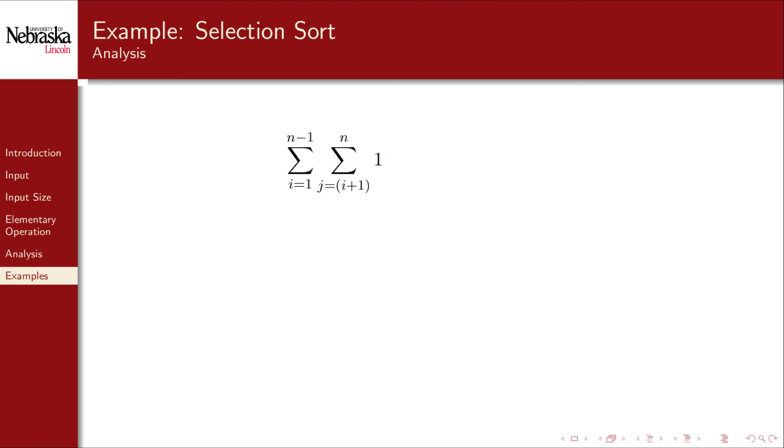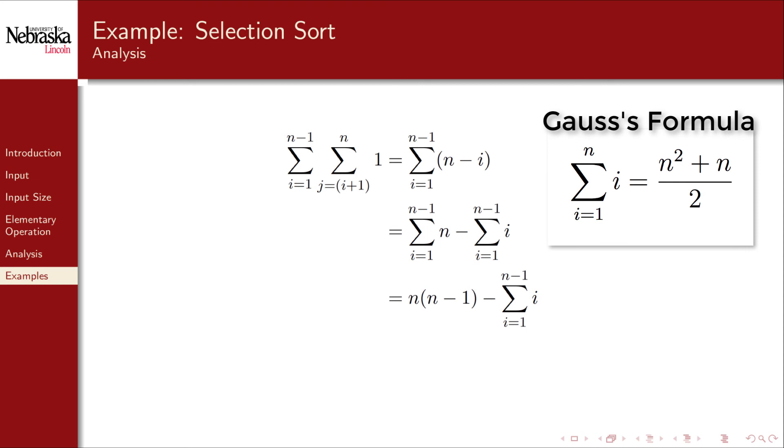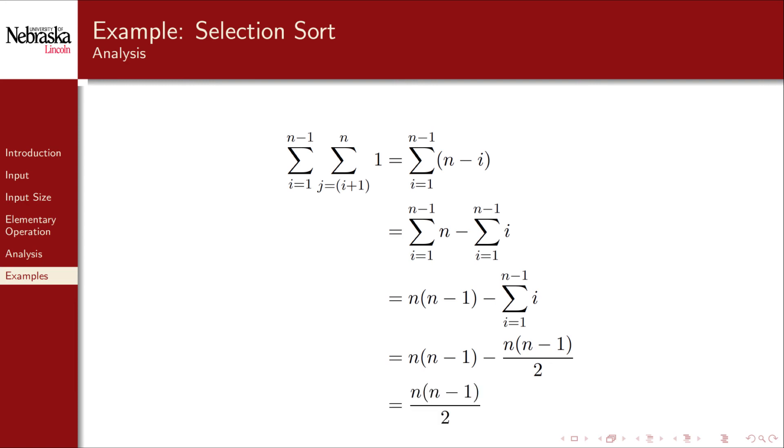Now we solve this summation. The inner summation is simply 1 plus 1 plus 1 n minus i times. The summation of sums is equal to the sum of summations, so we can break this up into two summations. The first summation is easy. It's simply n plus n plus n, n minus 1 times. The second summation can be solved by applying Gauss's formula, which gives us this closed form. The second term is half the first, so it simplifies to n times n minus 1 over 2.